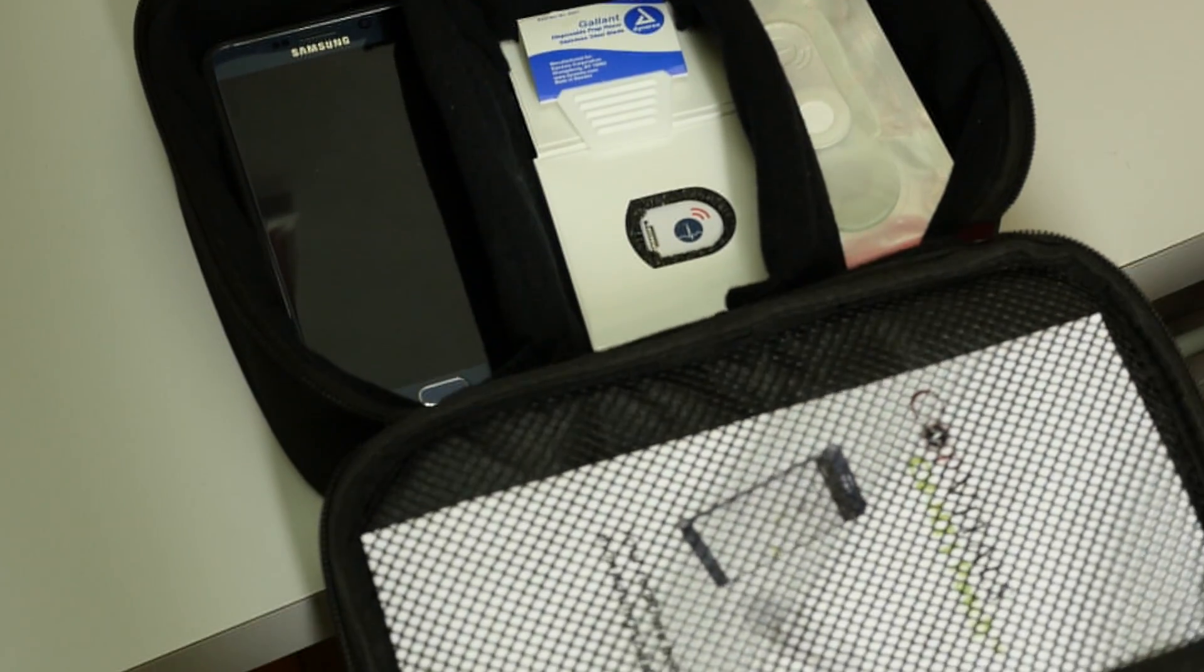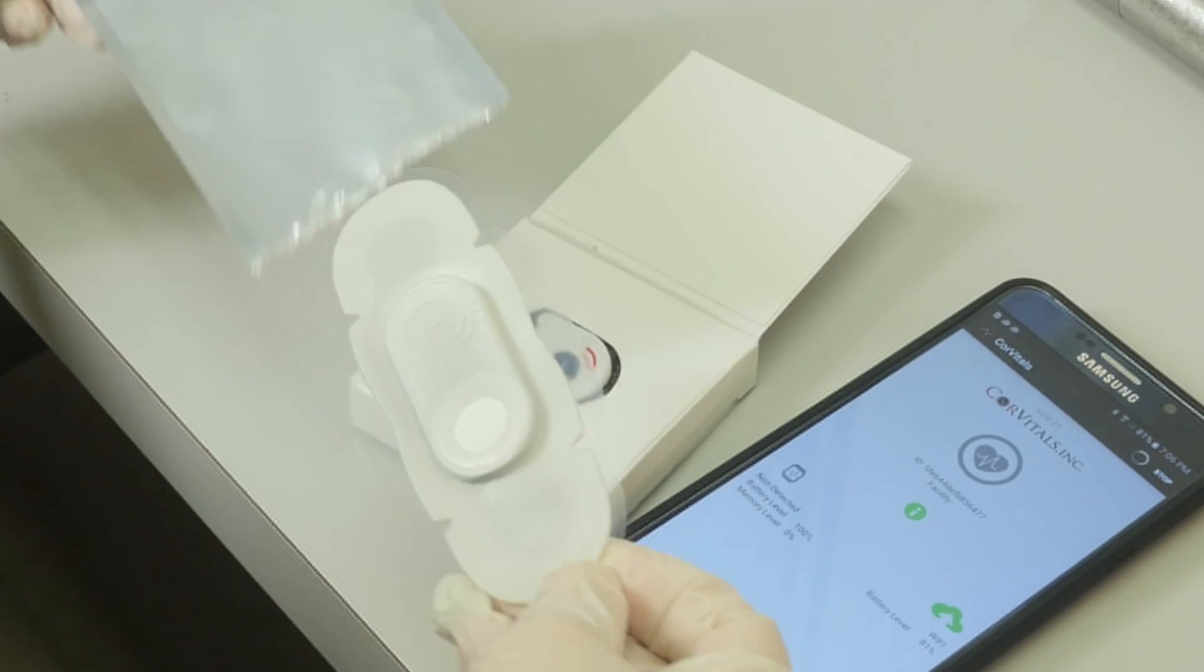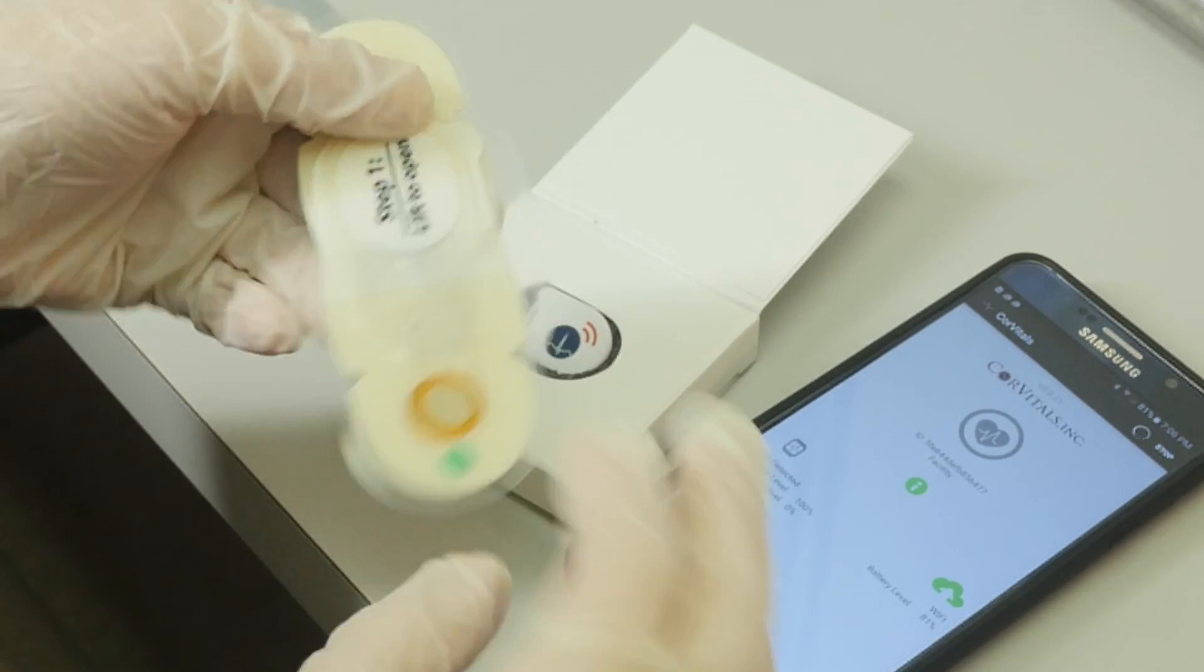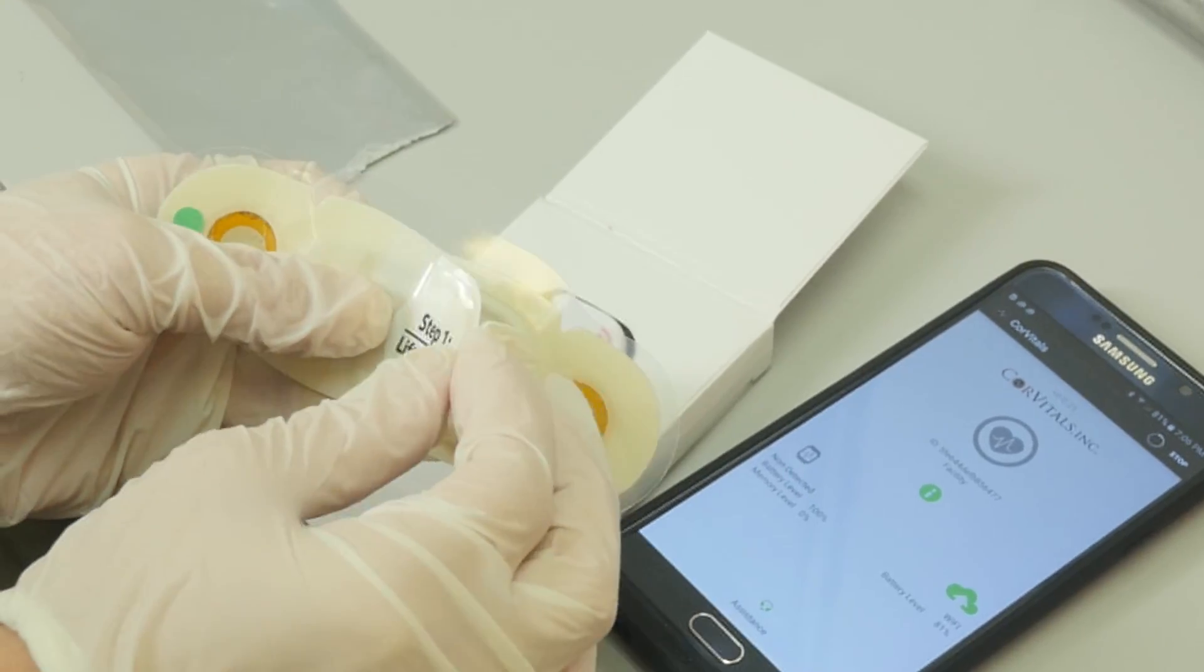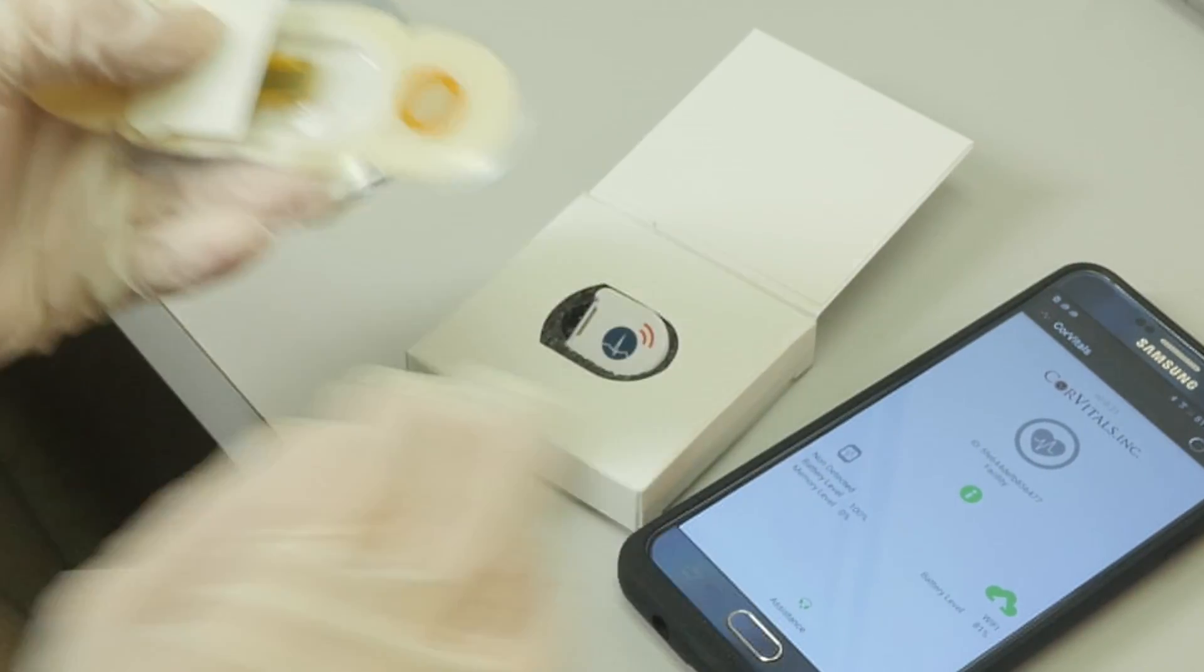Preparing the patch and module. With the adhesive side of the patch facing you, gently lift the flap. Be careful not to touch the adhesive strip.